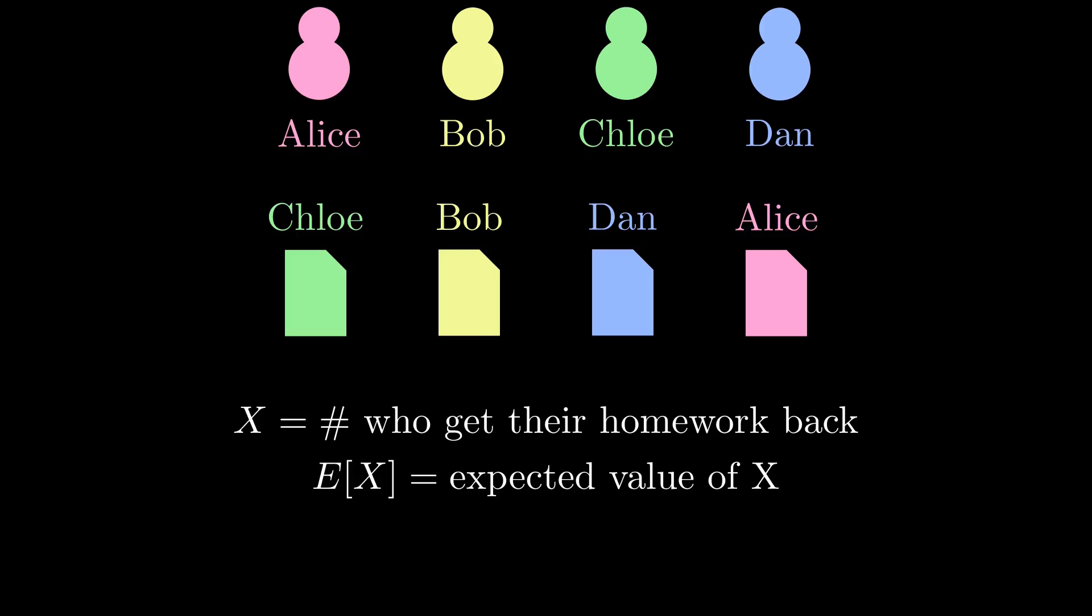Let's let the random variable X be the number of students who get their own homework back, aka the number of fixed points of a random permutation. In fact, that's what capital X means for this entire video.